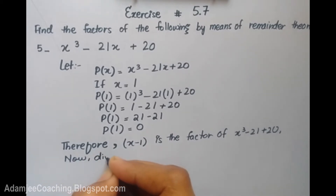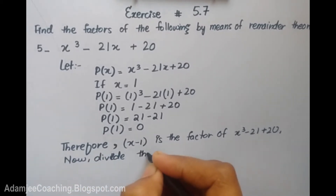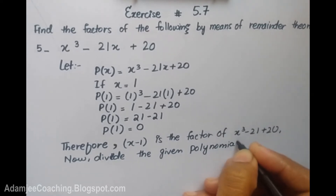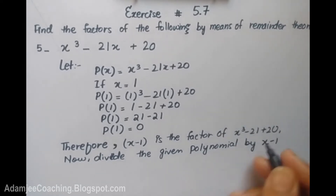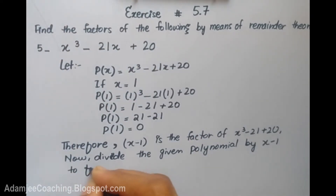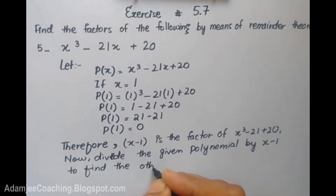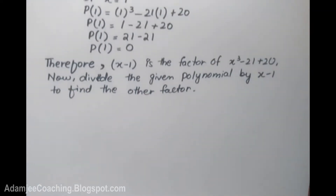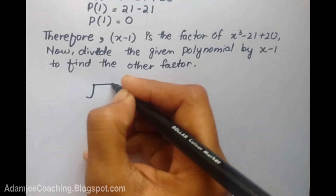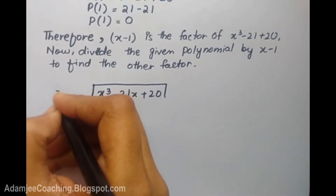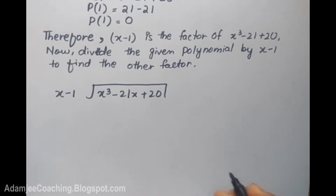Now divide the given polynomial by x minus 1 to find the other factors. Because we have one factor, we need to find the other factor. The given polynomial is x cube minus 21x plus 20, and the divisor is x minus 1, so we divide it.